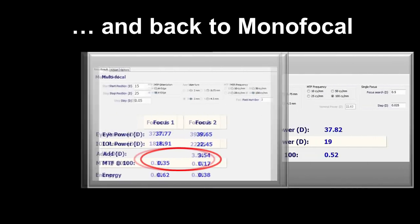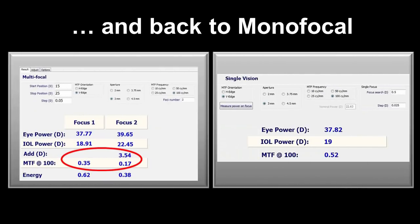The same lens was then turned back into a monofocal lens with a final MTF of 0.52, which is very close to the original MTF of 0.56 for the initial monofocal optic.